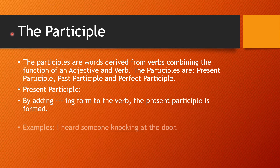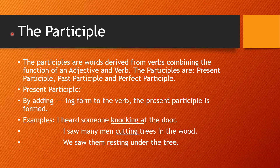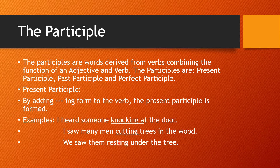What is the participle? The participle is also a non-finite verb. Participles are words derived from verbs combining the function of an adjective and a verb. The participles are: present participle, past participle, and perfect participle. The present participle is formed by adding ing to the verb. Examples: 'I heard someone knocking at the door.' 'I saw many men cutting trees in the wood.' 'We saw them resting under the tree.' Knocking, cutting, and resting are all present participles.